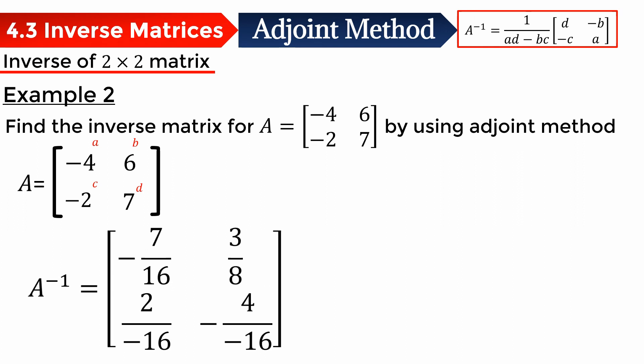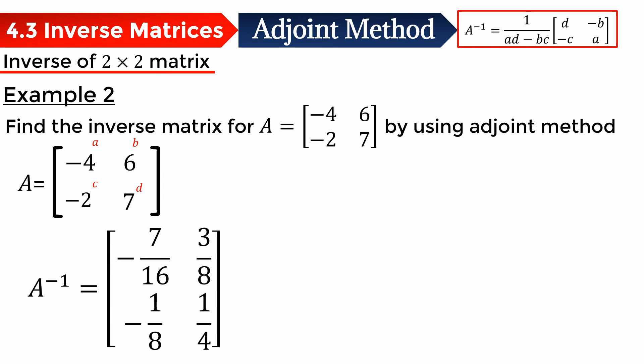This becomes 3 over 8, this becomes negative 1 over 8, and this one becomes positive 1 over 4. So this is the answer. Remember, if we want to find the inverse matrix for a 2x2 matrix, we just use the formula. We will continue in the next video. Thank you.